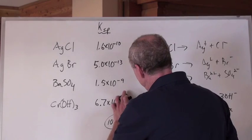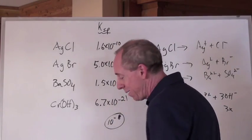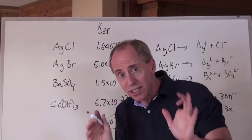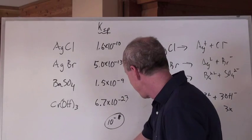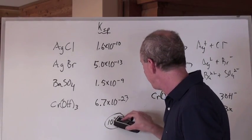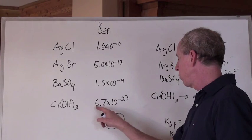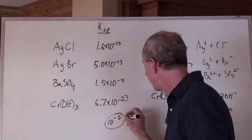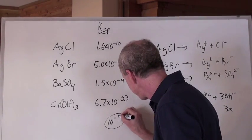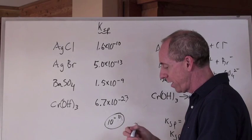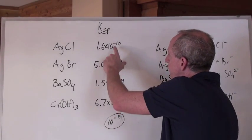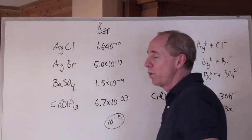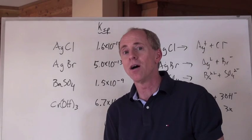But consider if the Cr(OH)₃ KSP were 10⁻²³ instead. Dividing by 27 gives roughly 10⁻²⁴, and the fourth root gives 10⁻⁶. Then all of a sudden, the compound that was 10⁻⁶·⁵ — AgBr — would actually be the lowest solubility compound. So the ranking can change depending on the actual KSP values.